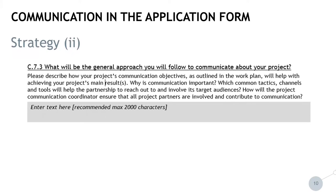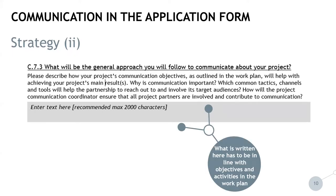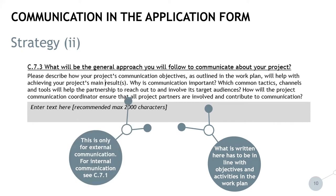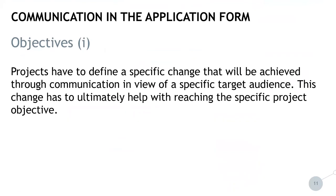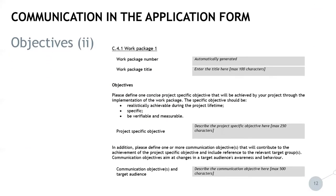Here, you will have to outline the general approach to communication according to the guiding questions. This has to be in line with objectives and activities in the work plan, and this is only for external communication. For internal communication, please see chapter C7-1 of the application form. In each work package, projects then have to define a specific change that will be achieved through communication in view of a specific target audience. This change has to ultimately help with reaching the specific project objective. One example for an objective could be: raise the awareness of five local mayors in participating project regions about project outputs that will help to foster circular economy in their regions.